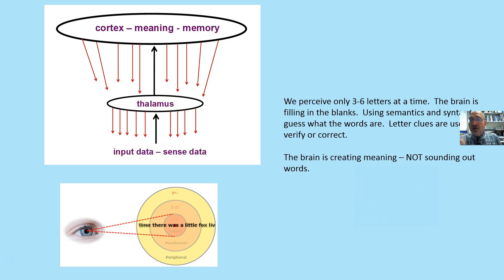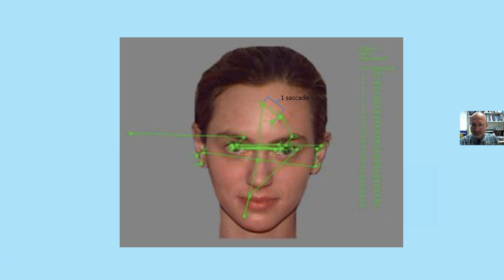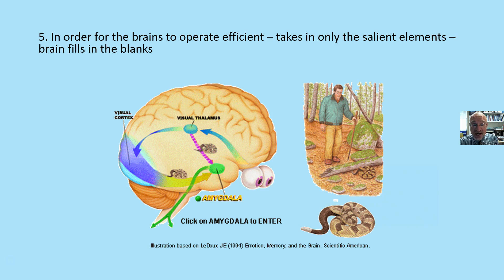Effective readers use minimal letter clues to create meaning with print. As you see, effective readers only focus on about sixty percent of the words as they read. There's an example of the foveal region that's clear. In order for our brains to operate efficiently, we don't record reality; we take in only the salient elements, and our brain fills in the blanks.